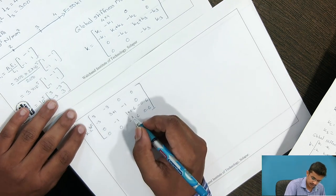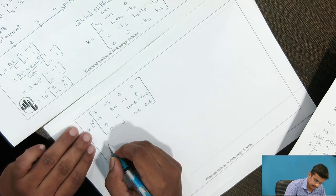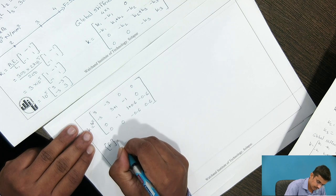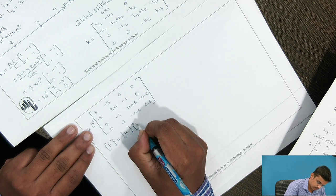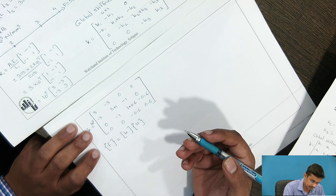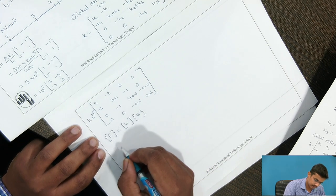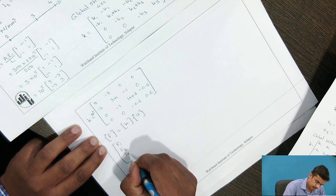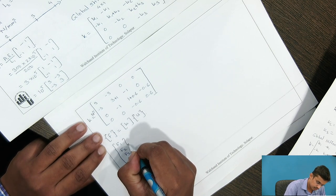This is the global stiffness matrix. Now the formula to calculate deformation at the four nodes is: the force vector F equals the global stiffness matrix K multiplied by the deformation vector U. For the first node the deformation is U1, second node U2, similarly U3 and U4 for the third and fourth nodes respectively. The force vector is F1, F2, F3, F4 — the forces at each node.